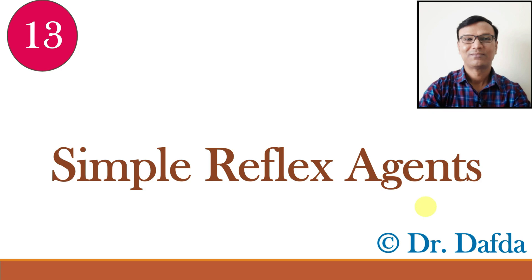Considering one more example: say our AI agent is an automatic door system and the environment in which it is working is the entrance of a building. The condition-action rules here will be: if it detects a person, then it opens the door; and if it detects no person, then it keeps the door closed. This is a simple reflex agent and it is the most basic type of AI agent.